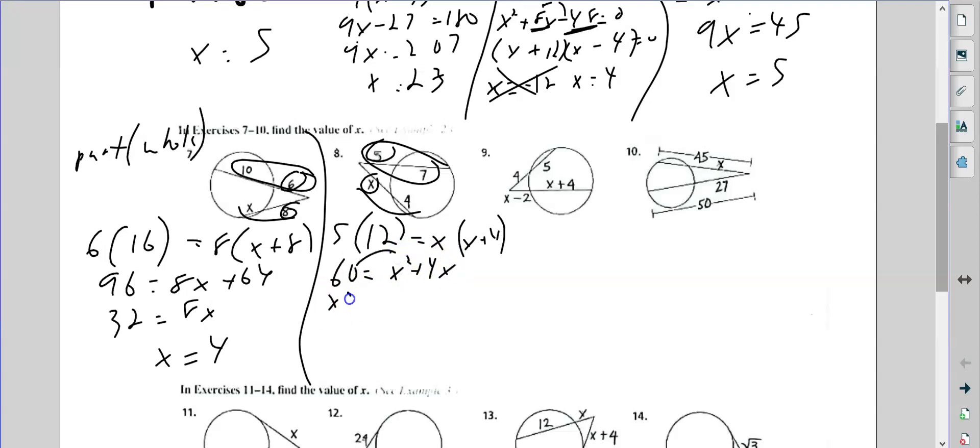Equals x squared plus 4x. Again, I need to move this over. So I get x squared plus 4x minus 60. And I need to factor.